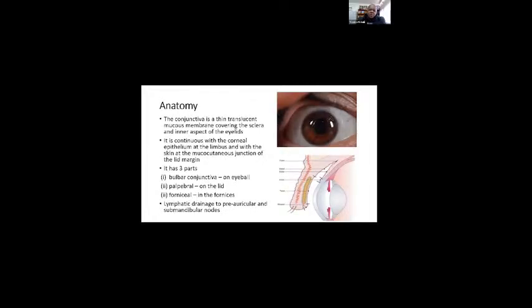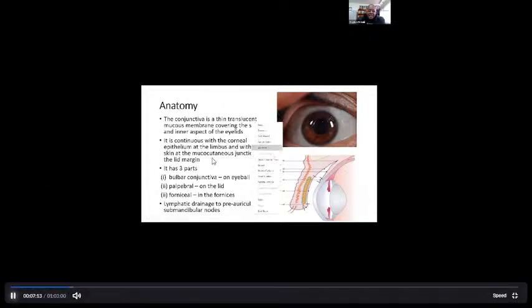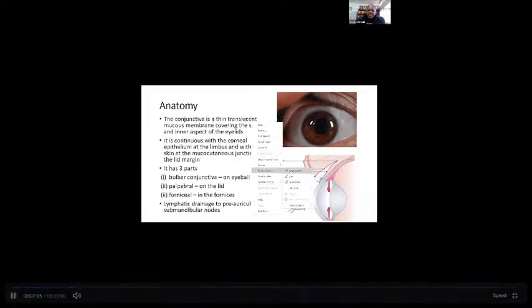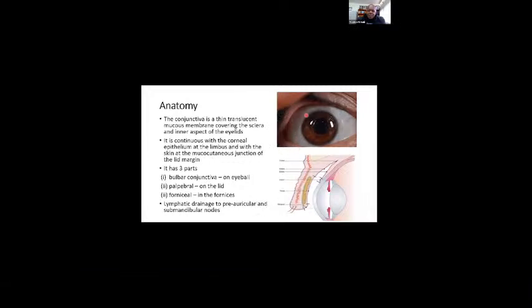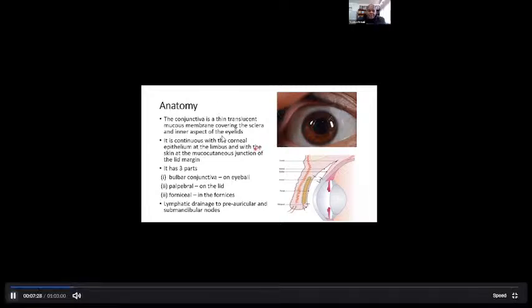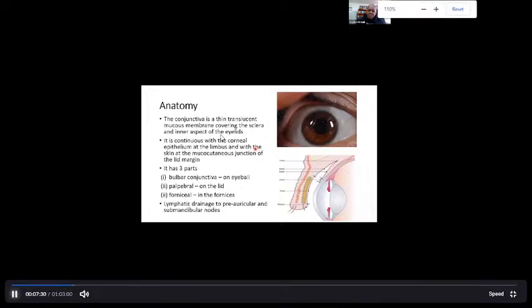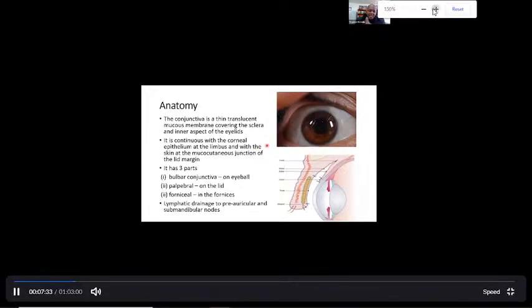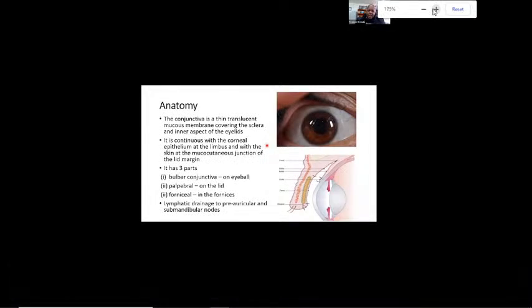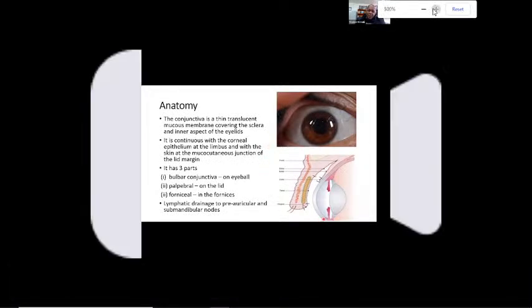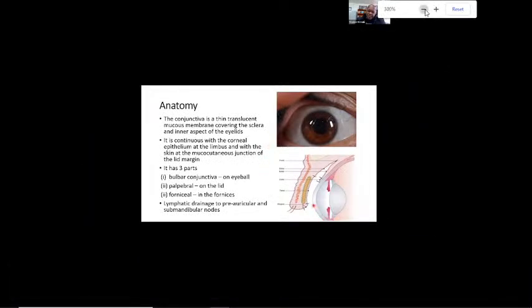The conjunctiva is this thin translucent mucous membrane that covers the eye. What we call the white of the eye looks white because it's covered by a translucent membrane called the conjunctiva which is like cellophane paper. You can see right through it. It's got some blood vessels which normally you should not see, so when you start to see them something's wrong.